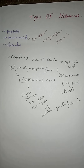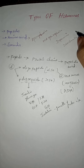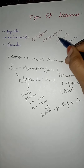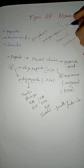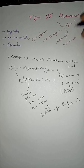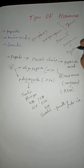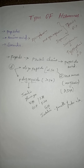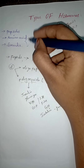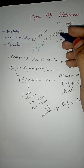Epinephrine, norepinephrine, and dopamine — these three are derived from the amino acid tyrosine. Serotonin is derived from tryptophan. So the key difference is: those three come from tyrosine, while serotonin comes from tryptophan. Amino acid hormones are hydrophilic in nature.